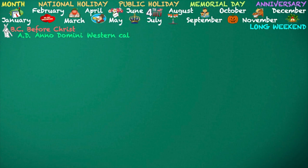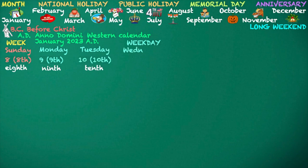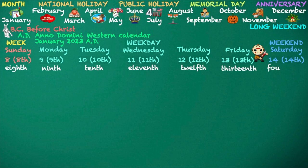Week. Sunday — Eighth. Weekday. Monday — Ninth. Tuesday — Tenth. Wednesday — Eleventh. Thursday — Twelfth. Friday — Thirteenth. Weekend. Saturday — Fourteenth.